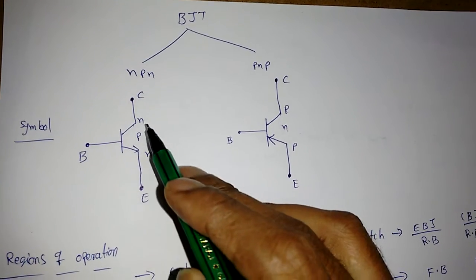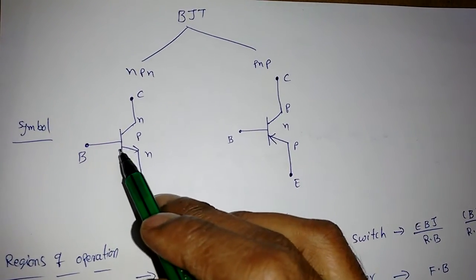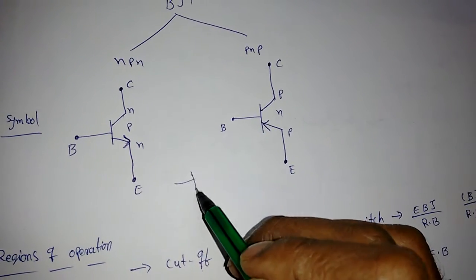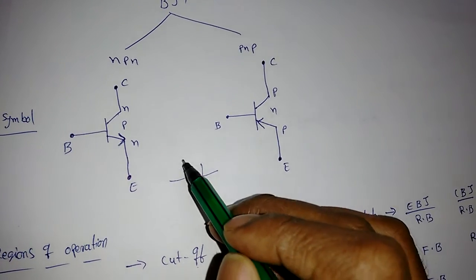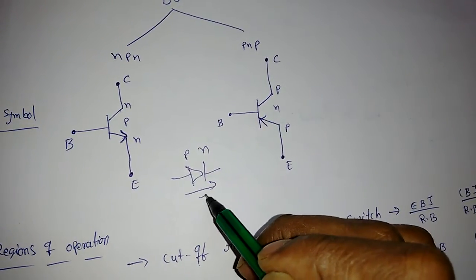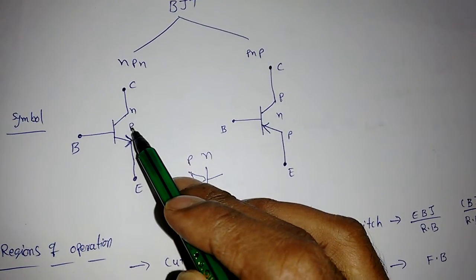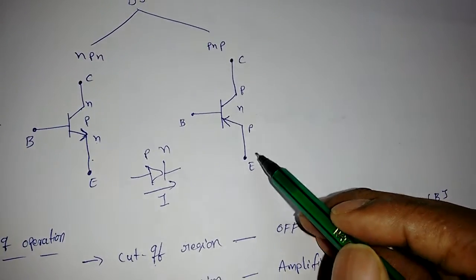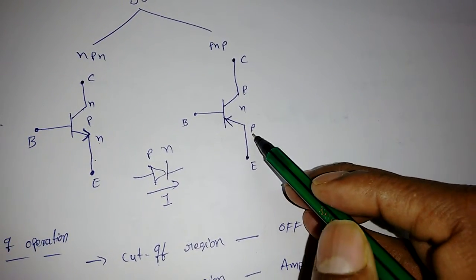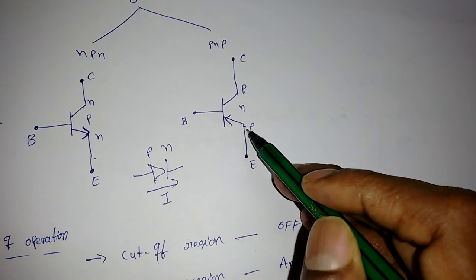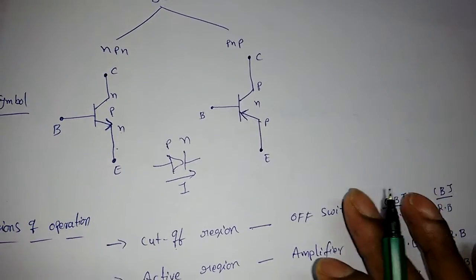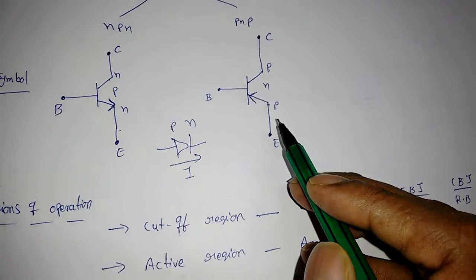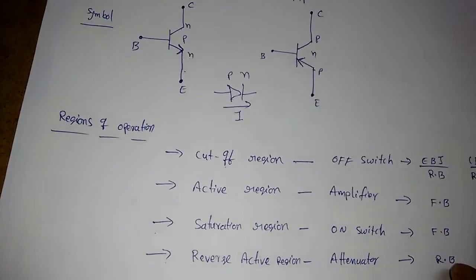Looking at the symbol: whenever NPN is there, the direction of current at the emitter is outward. This is because current always flows from P to N, so in NPN the base-to-emitter junction is forward biased. For PNP, the emitter-base junction has the emitter as P, so current direction is into the emitter — it is into the emitter in PNP.